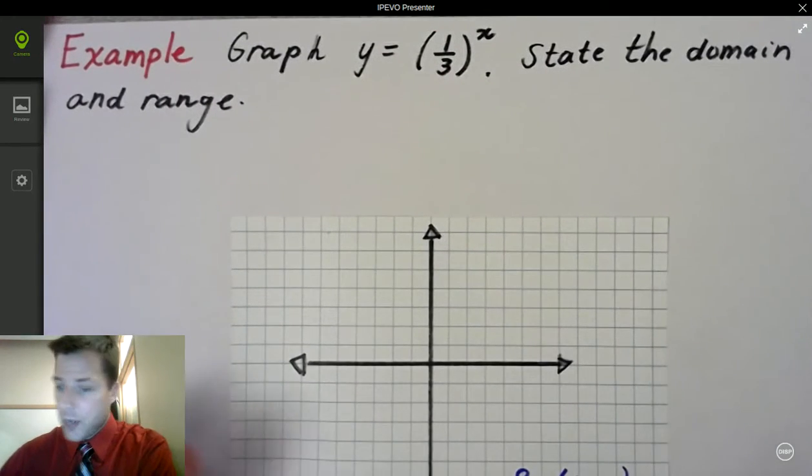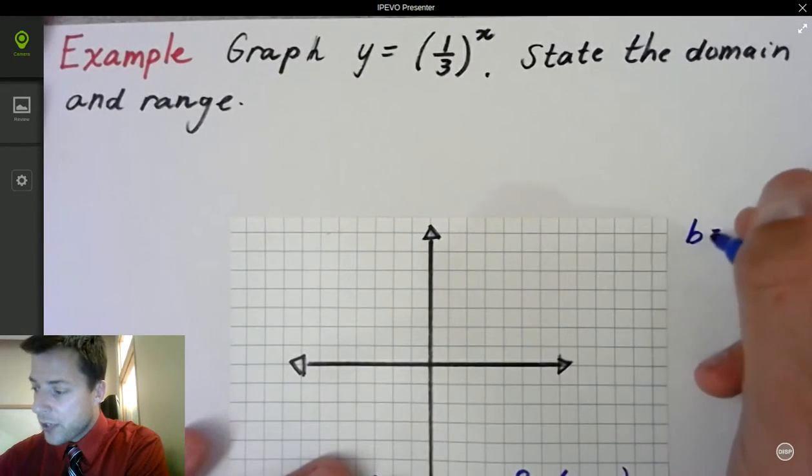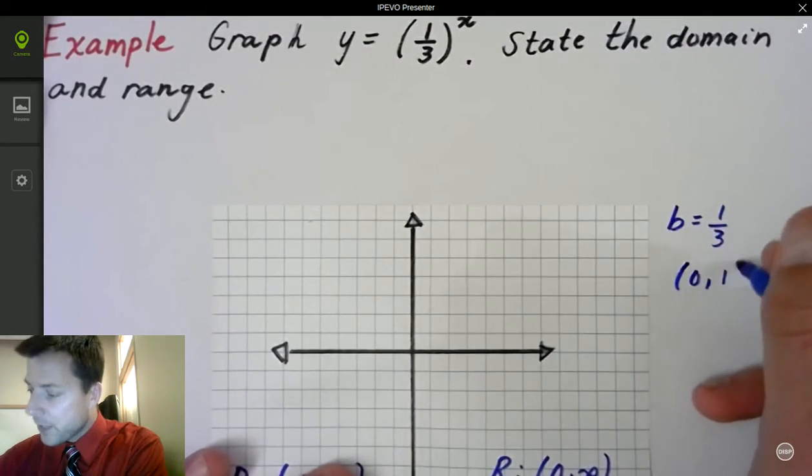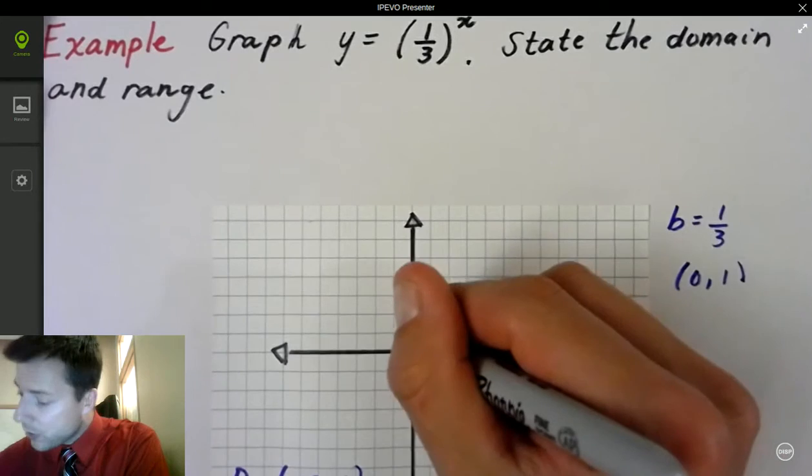There's a lot of ways you can do this. My b value is 1 third. Do you remember the key points? 0, 1. So let's go ahead and plot that 0, 1 right there.